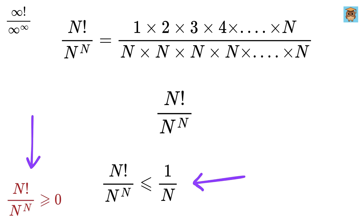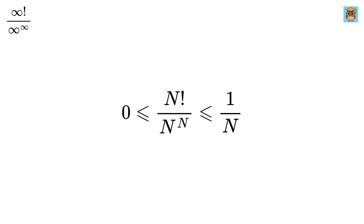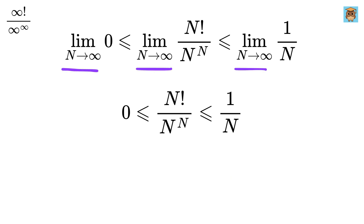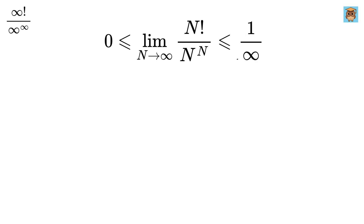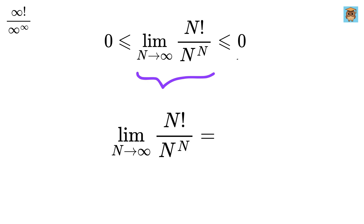From both bounds we get: 0 < n!/n^n ≤ 1/n. Now on all three sides, let us apply the limit as n tends to infinity. The left side gives 0, and the right side gives 1/n → 0. So by the squeeze theorem, this limit is both greater than and less than or equal to 0, and thus the limit itself is equal to 0.